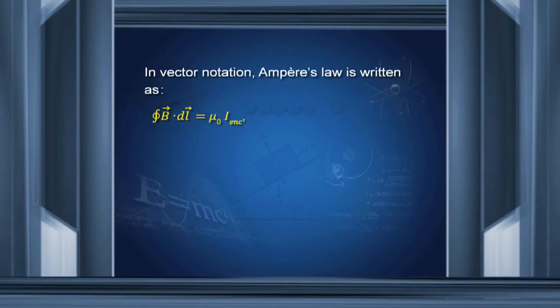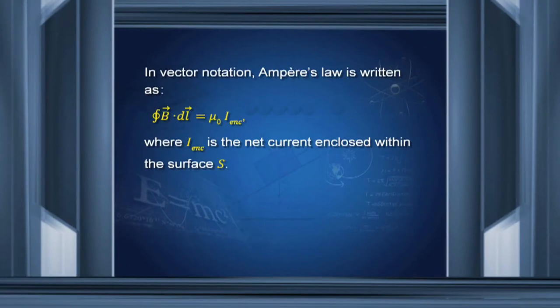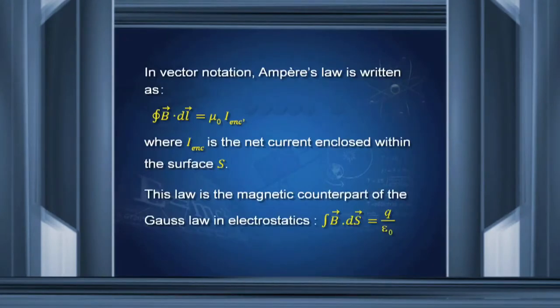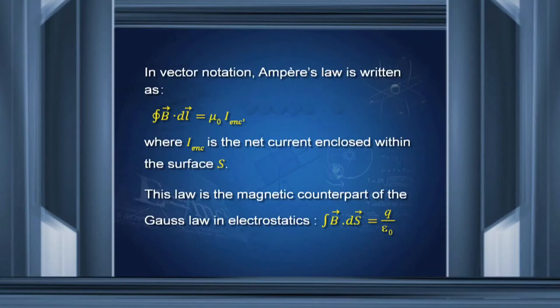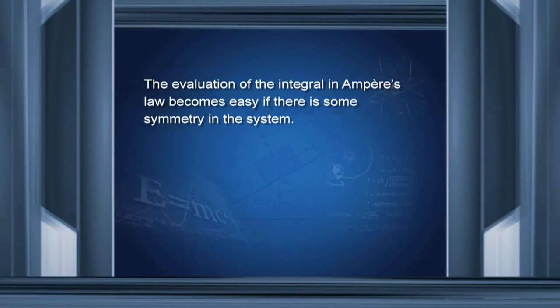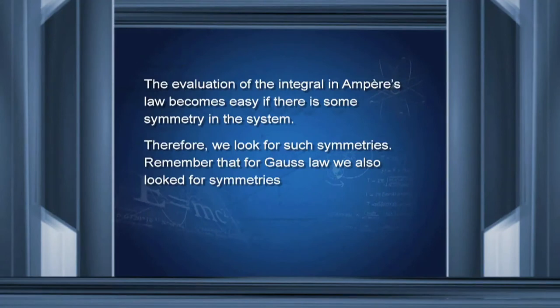In vector notation, Ampere's law is written as the closed loop integral of B dot dL equals mu_0 times I_enclosed, where I_enclosed is all the currents passing through the surface enclosed by the loop. This law is the magnetic analog or counterpart of Gauss's law in electrostatics. Recall that in Gauss's law, the integral of B dot dS — where dS is an element of the surface — gives the total flux, and the total flux equals the charge enclosed divided by epsilon_0. The evaluation of the integral in Ampere's law becomes easy if there is some symmetry in the system.